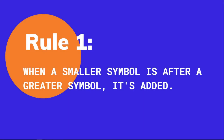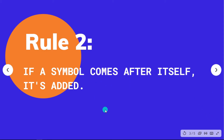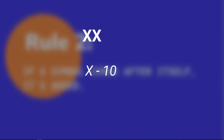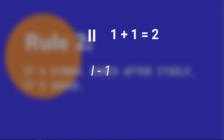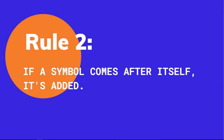The next rule says that if a symbol comes after itself, then it is added. For example, XX: X means 10, so XX equals 10 plus 10, which is 20. Similarly, II represents 2 because I represents 1 and II means 1 plus 1, which is 2.